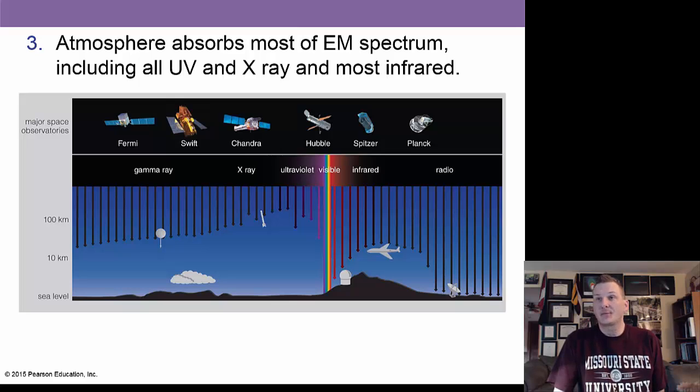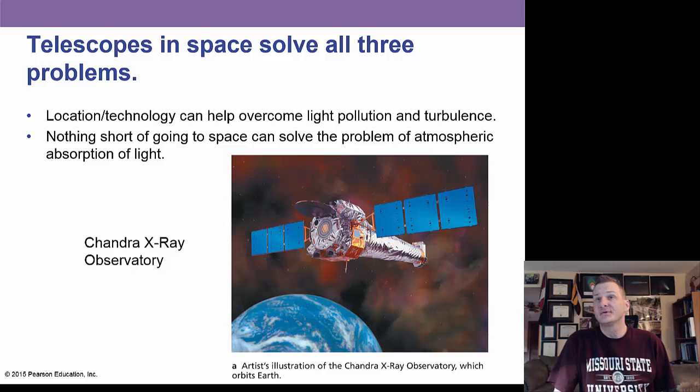Sometimes, the atmosphere absorbs certain wavelengths, and that's true with ultraviolet x-rays. So, we have to put those kind of telescopes up in space. And we have an infrared telescope called Spitzer. Telescopes in space solve these problems, like Chandra, a good friend of mine works on.